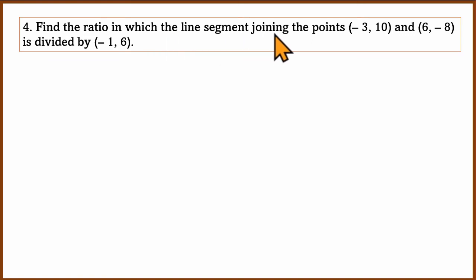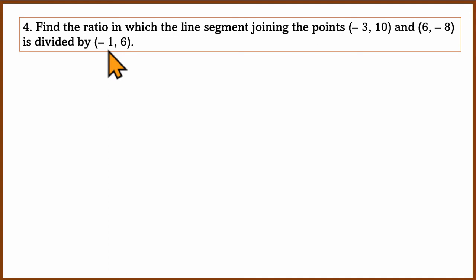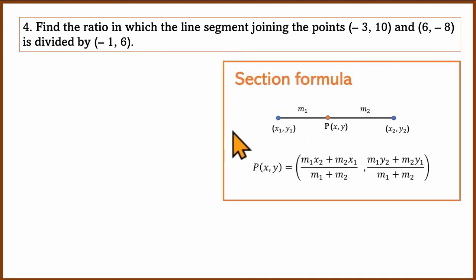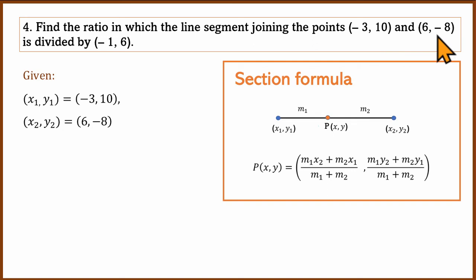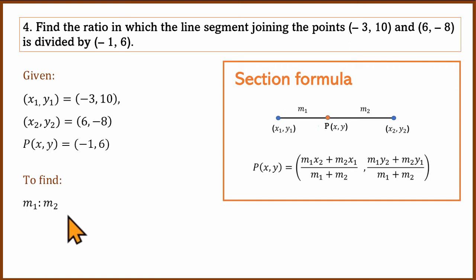The fourth question: find the ratio in which the line segment joining (-3, 10) and (6, -8) is divided by the point (-1, 6). We have two endpoints and a dividing point. Using the section formula with x equal to -1, we set up the equation and substitute the values with unknown ratio m1 to m2.